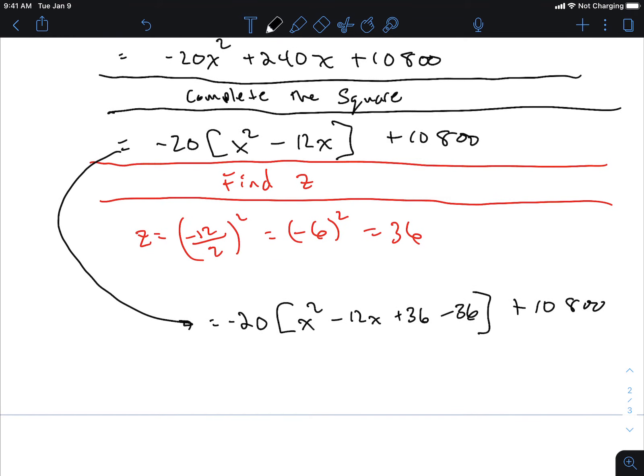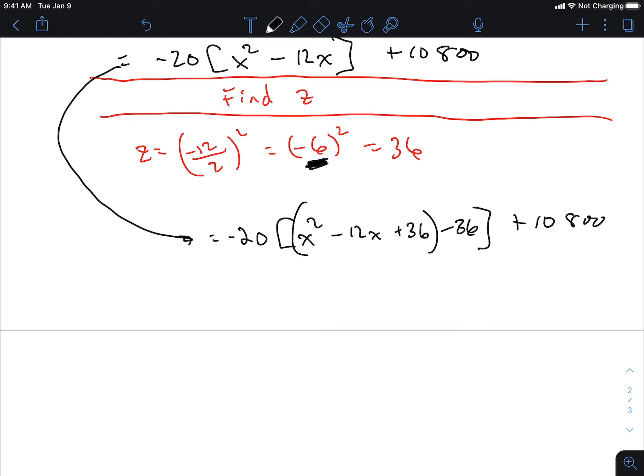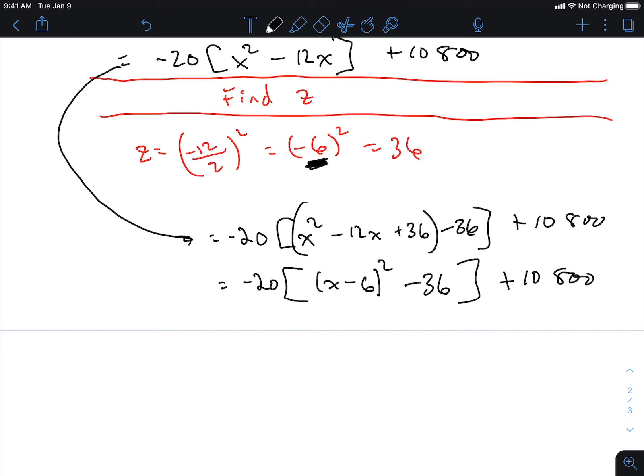The first three terms create a perfect square trinomial. They combine to this little number inside the bracket there. x minus 6 squared minus 36 plus 10,800. Multiply the 20 in. Negative 20 times x minus 6 squared. What is negative 20 times negative 36? 720. What's the final answer?